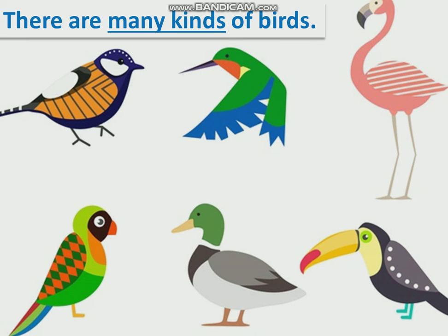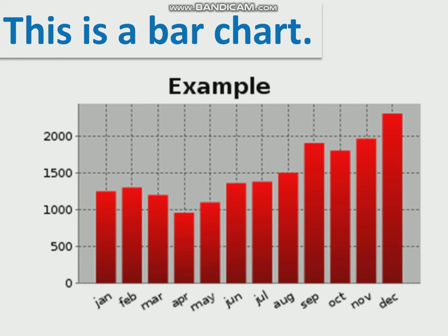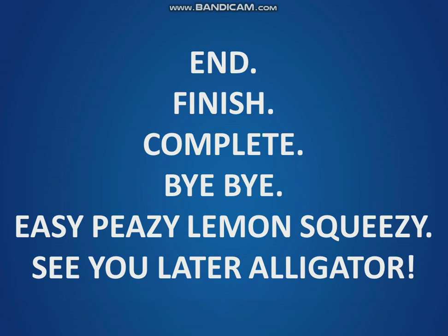There are many kinds of birds. Look at all the kinds of birds — many colors. Some birds are big, other birds are small. There are many kinds of birds. Many kinds in Portuguese is 'muitos tipos'. This is a bar chart — in Portuguese, a bar chart is a 'gráfico de barra'. Bye-bye! Easy peasy, lemon squeezy. See you later, alligator.